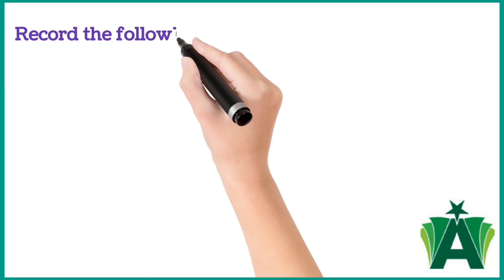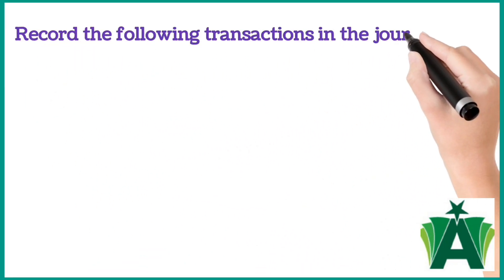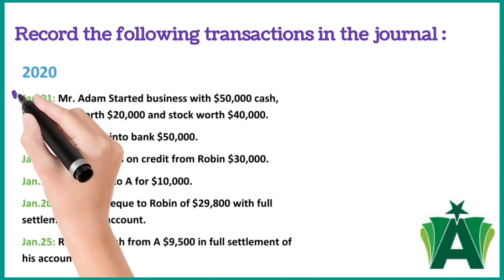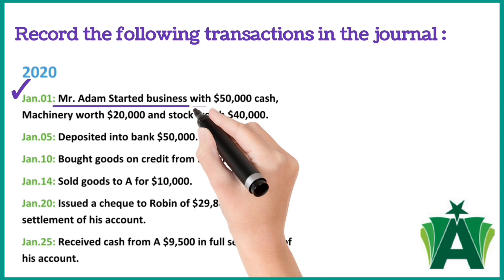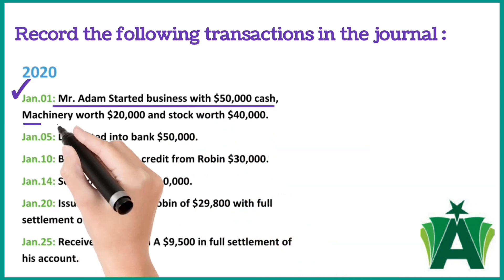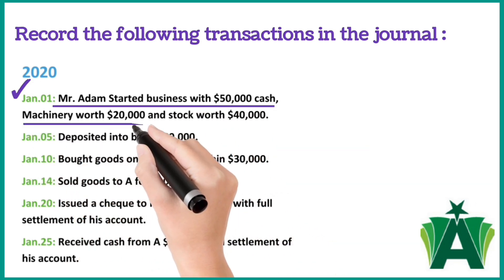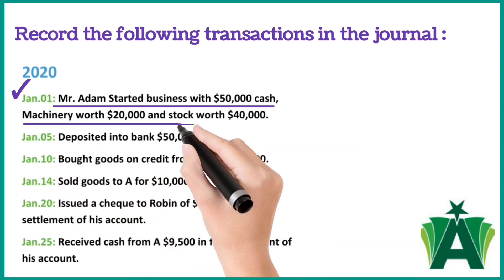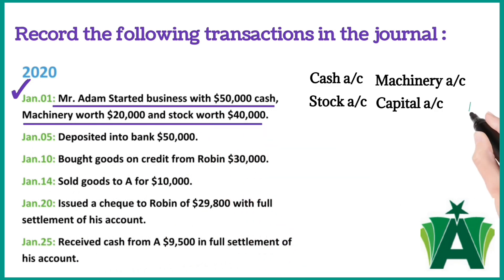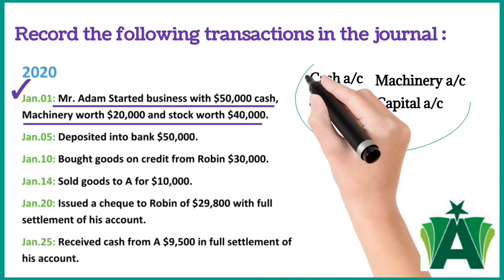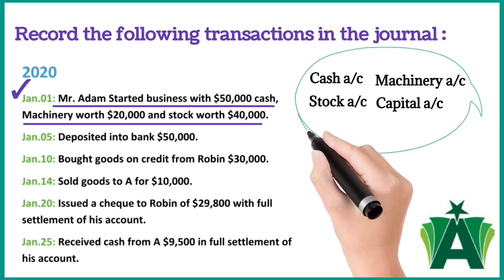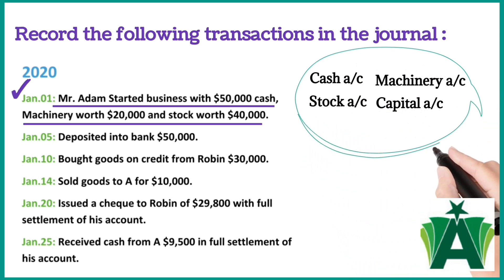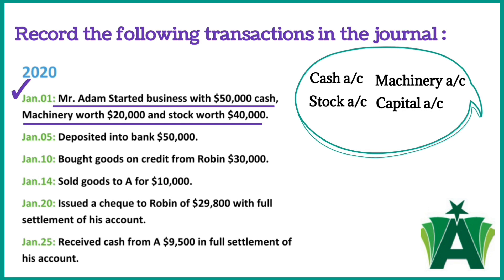Record the following transactions in the journal. 2020, January 1: Adam started business with $500,000 cash, machinery worth $20,000, and stock worth $40,000. In this transaction, four accounts are involved: cash account, machinery account, stock account, and capital account.